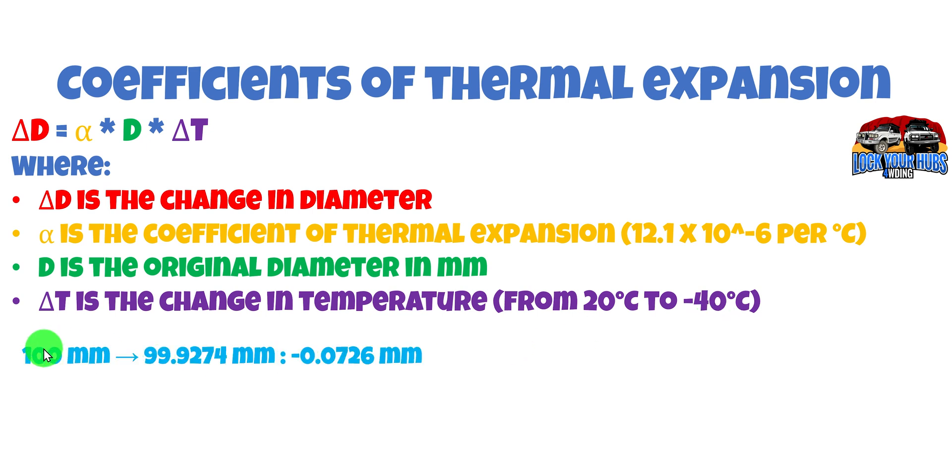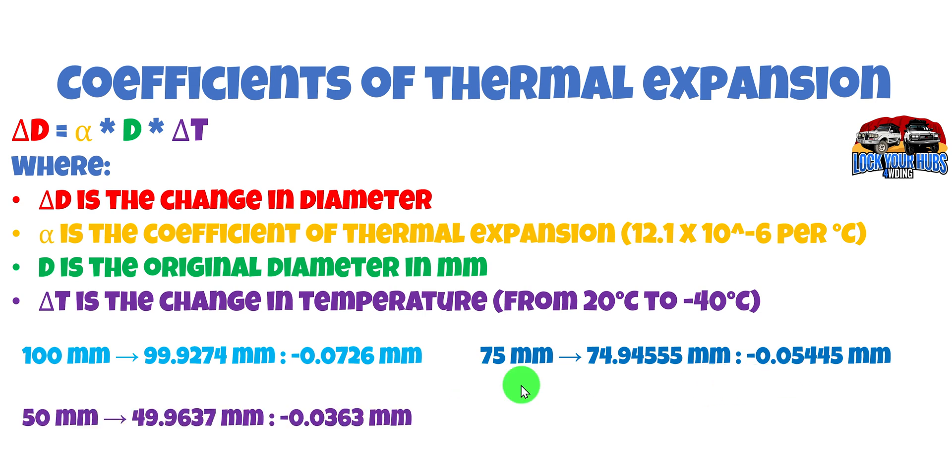Righto. So for 100 mil diameter bearing race, it should go down to 99.9274 millimeters. And that's a change of 0.07. And as we get smaller, the change gets less. So 75 goes down 0.05. 50 mil goes down 0.03 or 0.04 roughly. And finally, 25 mil goes down 0.018. And that's how the coefficient of thermal expansion works to change the diameter so we can push in that bearing race a little bit easier.